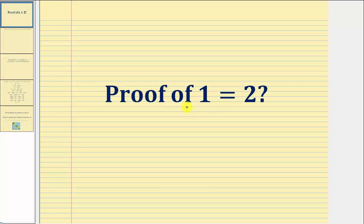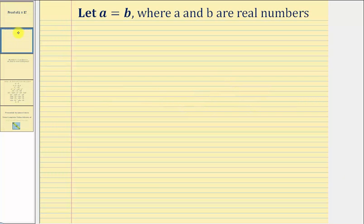Welcome to a potential proof that one equals two. We'll begin the proof by letting A equal B, where A and B are real numbers. Starting with the given information, we have A equals B.